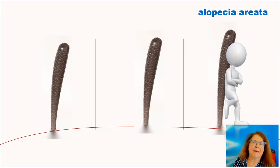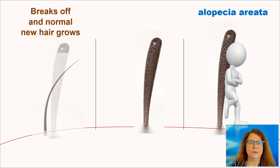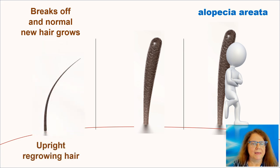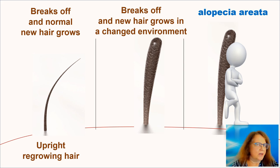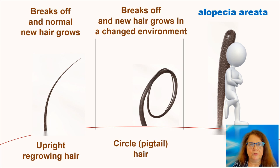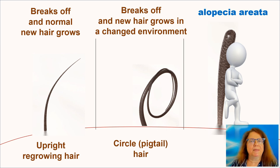So what more can happen with an exclamation mark hair? When it breaks off, it is possible that a new hair starts growing, and these normal hairs we call the upright regrowing hair. But sometimes the environment is still not very normal — the hair breaks off, the new hair starts growing, but it does not have the shape of a typical upright regrowing hair. It will coil, and this forms a so-called circle hair, or sometimes we call them pigtail hairs.